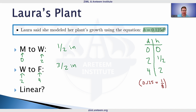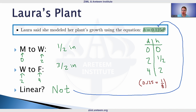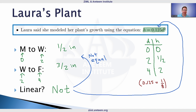It's easy to see that Laura's plant is not linear. There are a couple of explanations for this. One is that the equation h = 0.125d² is quadratic — it has a squared term, which means it is not a linear equation. Another way to explain it is that the growth over the two-day periods is not equal: half an inch versus one and a half inches. Either of those observations confirms this is not linear.